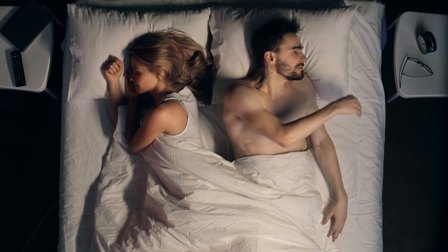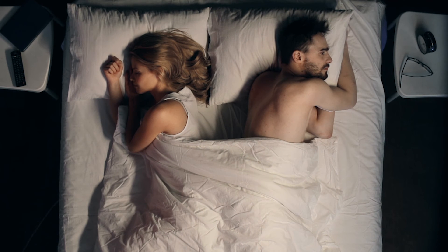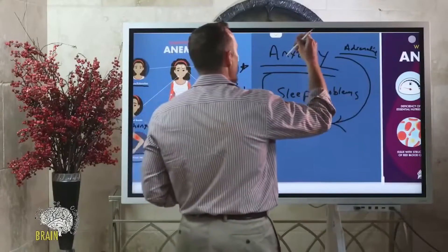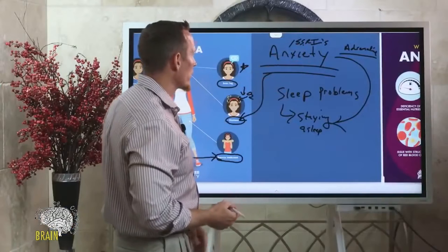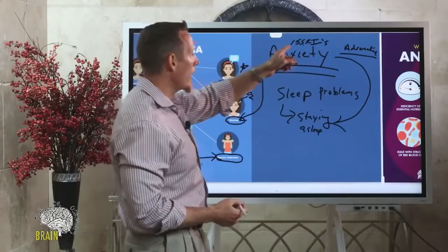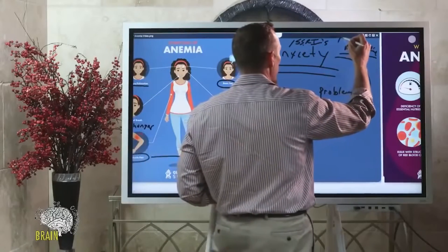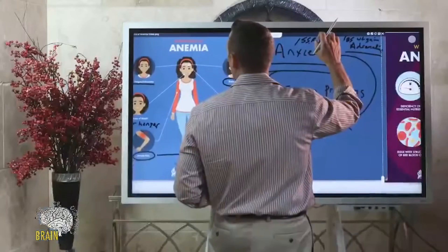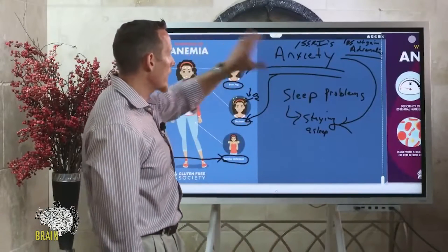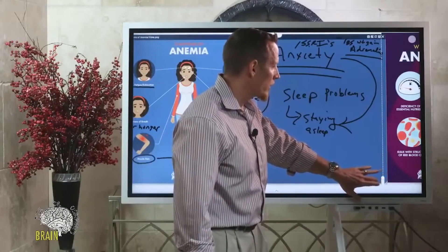Anxiety and sleep disturbance are commonly dismissed or misdiagnosed. Often when women describe these symptoms to their doctor, they're prescribed SSRIs — selective serotonin reuptake inhibitors like Paxil or Prozac — to treat anxiety. But if the anxiety is biochemically induced by lack of oxygen from anemia, an SSRI won't help and can cause side effects like IBS and weight gain. This misdiagnosis scenario — anxiety treated with SSRIs when the real cause is anemia — is not uncommon.